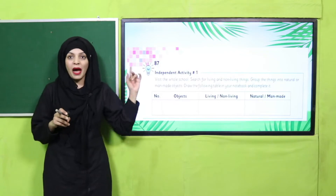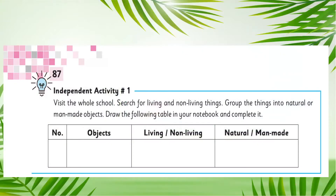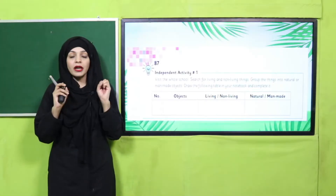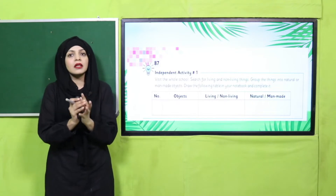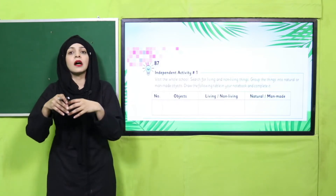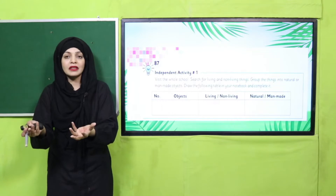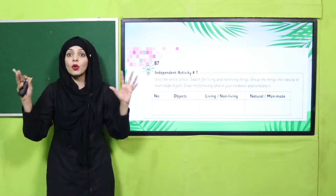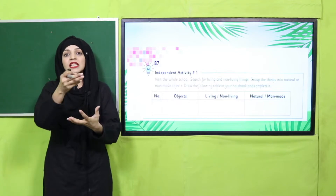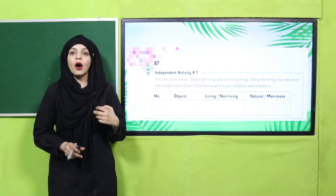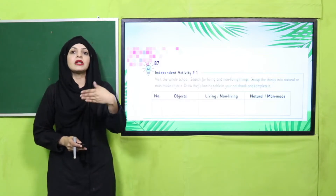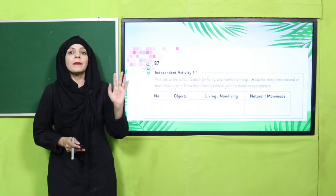You will provide students with a worksheet — I'll show it to you shortly — which looks like a table on screen. Students will record their findings on it. The interesting part is students go on a scavenger hunt and have to find living things, non-living things, natural living things, and man-made non-living things along the way, recording everything on the worksheet.